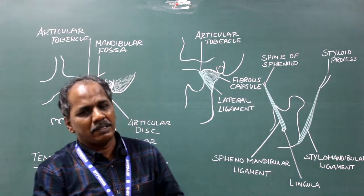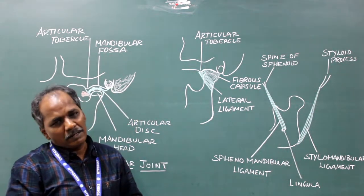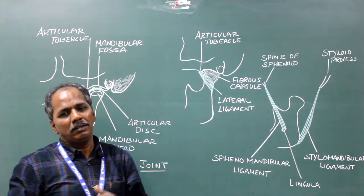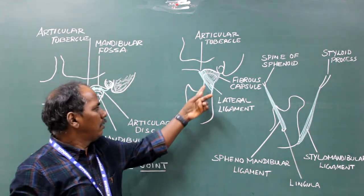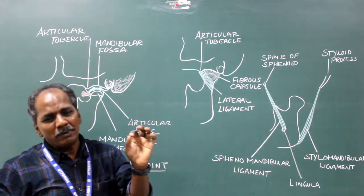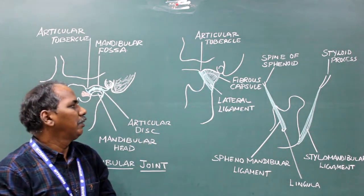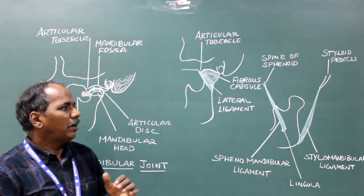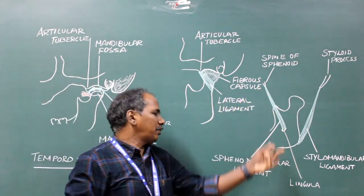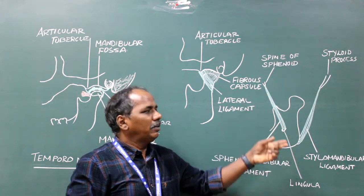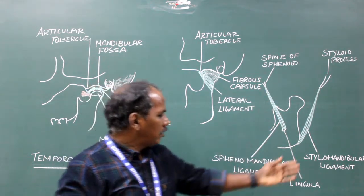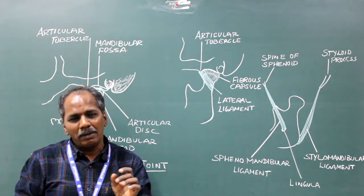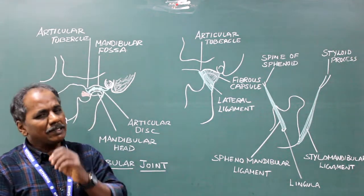Ligaments. The ligaments of the temporomandibular joint are: number one, fibrous capsule; number two, lateral ligament or temporomandibular ligament — it is the true and main ligament of the temporomandibular joint; number three, the spinomandibular ligament; number four, the stylomandibular ligament. The spinomandibular ligament and stylomandibular ligament are accessory ligaments.